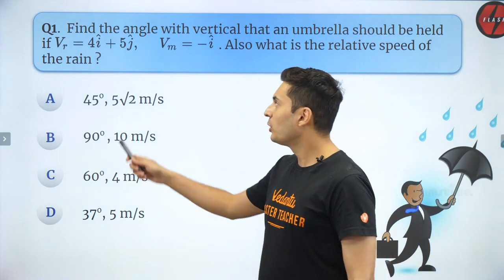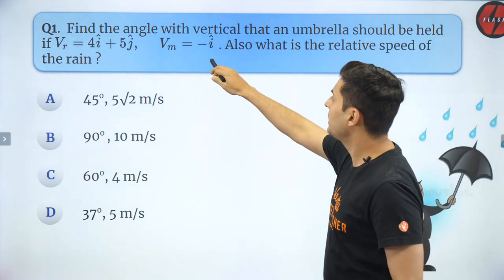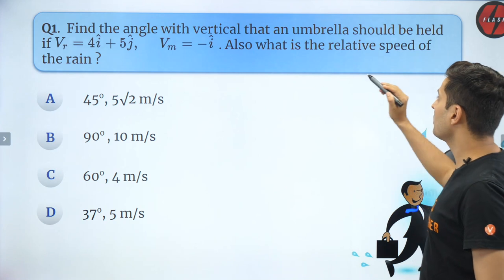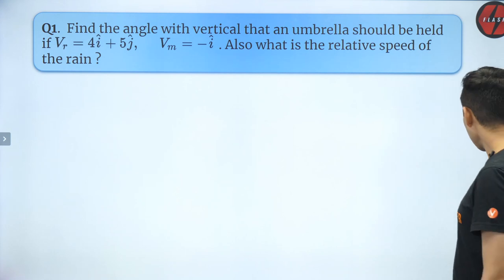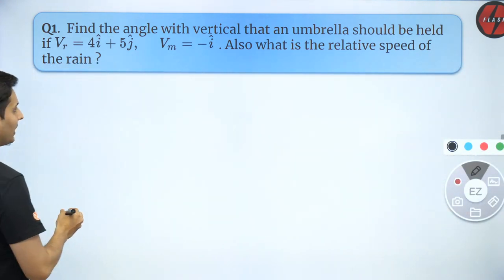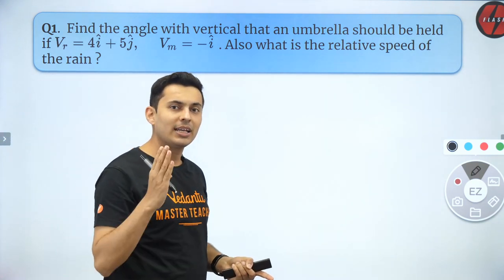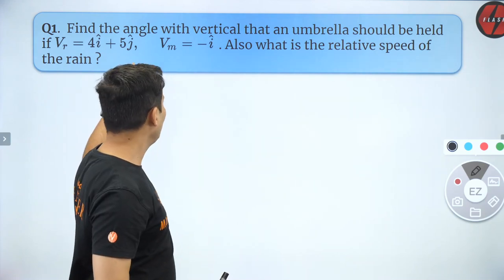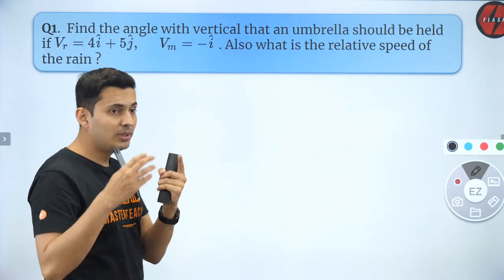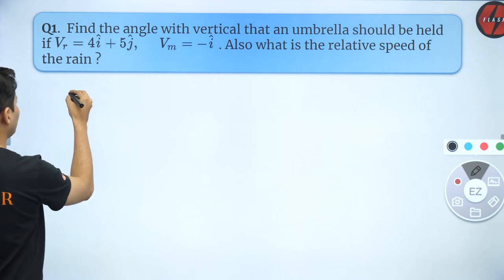Let's get going with our first question. A person is traveling with a velocity of minus i-cap units and the rain is falling with a velocity of 4i + 5j. The question asks for the relative speed of the rain. Remember the formula for relative velocity of rain with respect to the person. The velocities are given in i-cap and j-cap unit vector notation, which makes this much simpler than when the magnitude and direction in degrees are given.